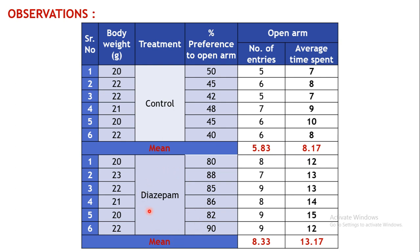Coming to the treatment group, the percent preference to the open arm has increased after treatment with diazepam. Although the animal normally fears to be in the open arm, after diazepam treatment it is preferring the open arm. The number of entries in the open arm has also increased compared to the control group — from 5.83 up to 8.33. The average time spent in the open arm has also increased in the diazepam-treated animals compared to control animals, rising to 13.17 seconds.